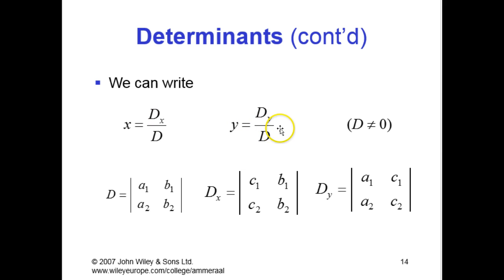So our determinant is the original a₁, a₂, b₁, b₂, and then for dₓ we substitute the constants in for the x coefficients and in dᵧ we substitute the constants in for the y coefficients.